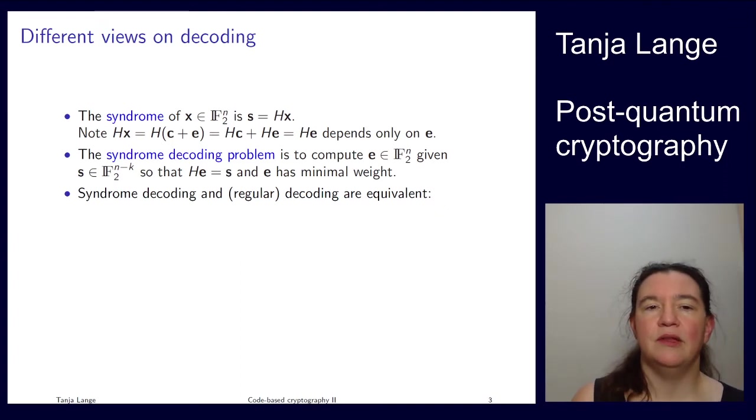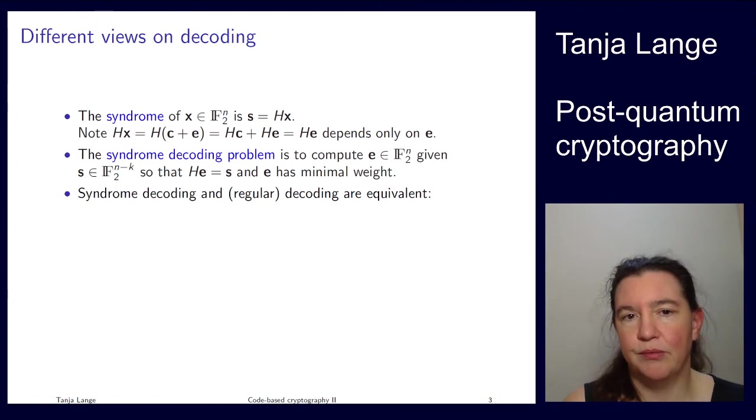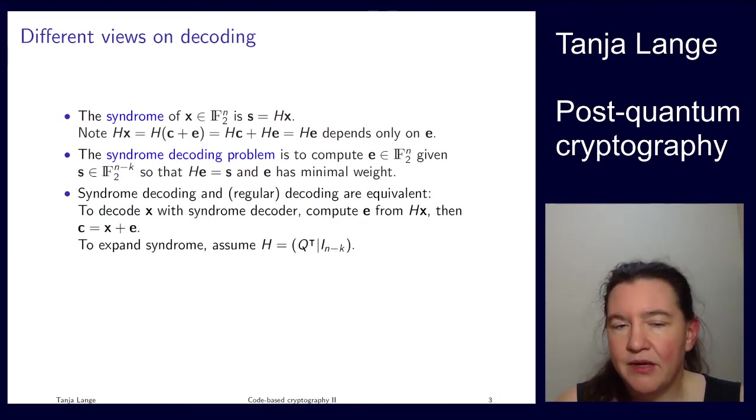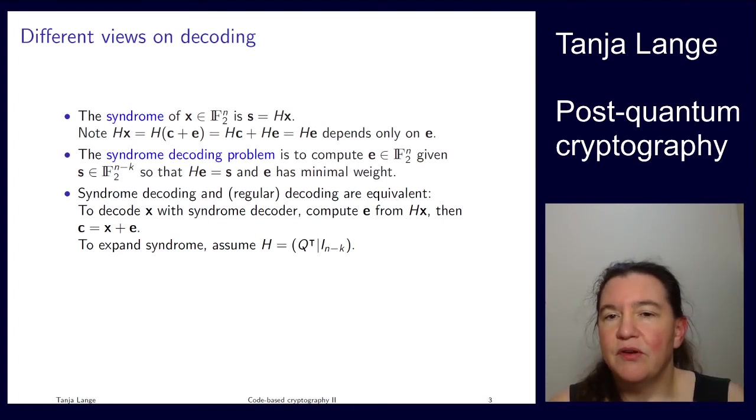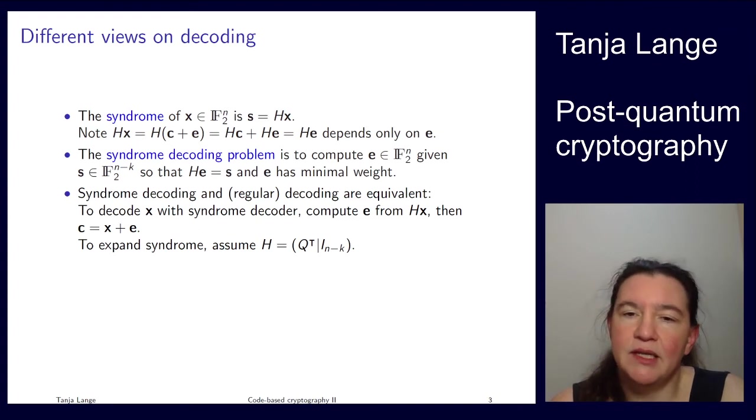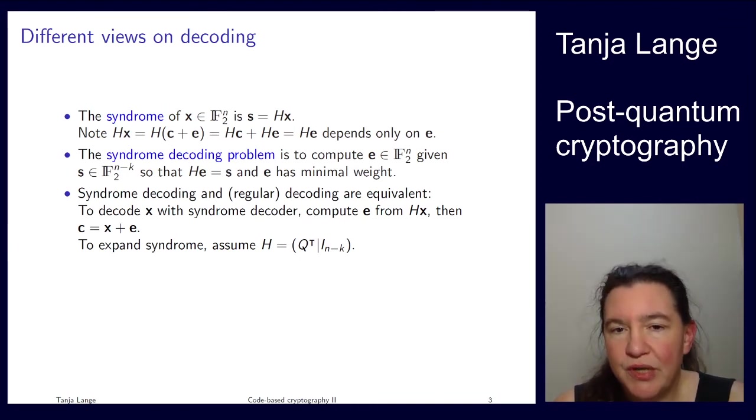That is also what we have in the regular decoding problem. You want to find the closest codeword to what you have received. Similarly here, you want to find the e of minimum weight. Now, assume you have an algorithm that allows you to do syndrome decoding. Can you use it for doing regular decoding? That is kind of obviously true. So if you have that sitting around, you toss in your x and you compute the syndrome, which you can do because it is a parity check matrix. For instance, if it is in systematic form, or if you are given only g, you have to sort of invert it to get H, but you can always compute a matching H. Then you use your syndrome decoder, you get e, and from e you can get back to c.